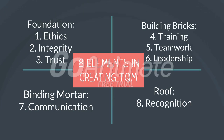There are eight elements towards creating TQM. First, foundation — under foundation, there are ethics, integrity, and trust. Second, building bricks — under building bricks, there are training, teamwork, and leadership. Third, binding mortar, which is communication. And the last is the roof, which is recognition.